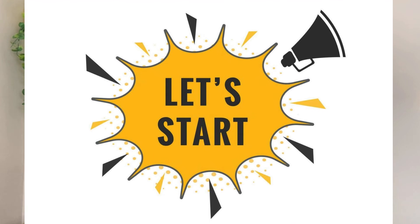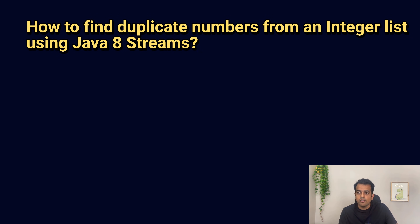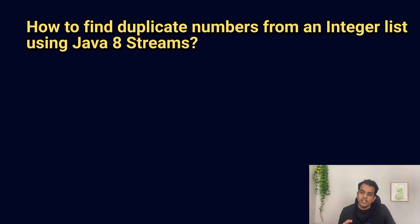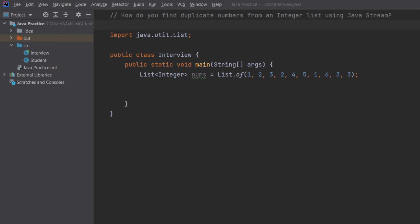The first question was itself a Stream API coding question. The question was: how do you find duplicate numbers from an integer list using Java streams? I will share my screen and we will go to IntelliJ IDE and then we will solve this question. I have already created a list of numbers which have some duplicates as well.